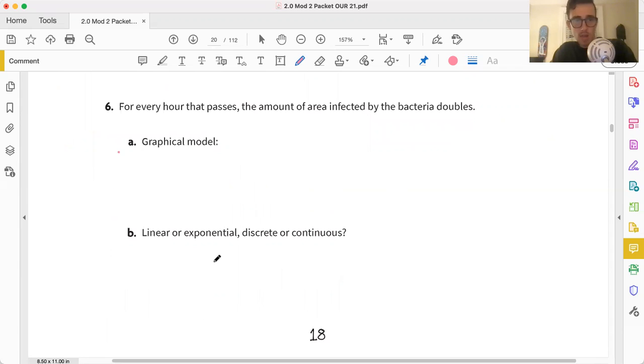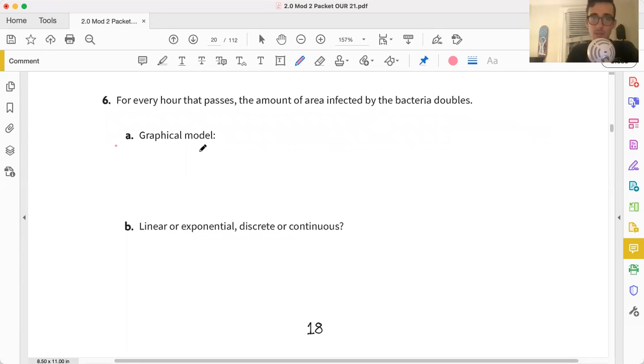For six, every hour that passes the amount of area infected by the bacteria doubles. So let's imagine the bacteria starts out pretty small and over time, and then we'll have this measure of bacteria. Should have done this on the other one, but it's okay. It's going to double, so it's going to start out pretty chill, and then it's just going to kick up real quick. And we can have fractions of this, so it's definitely continuous and it's going in an exponential fashion. There you go. Hopefully you can knock out the other two.